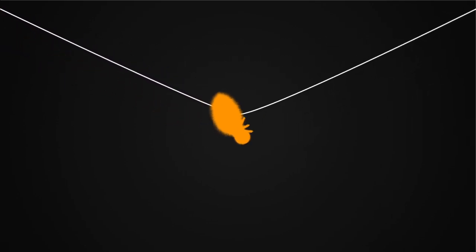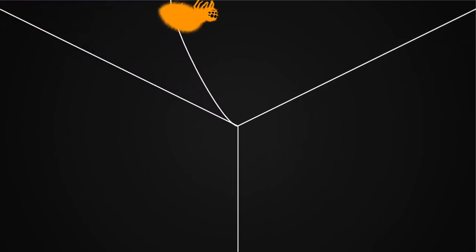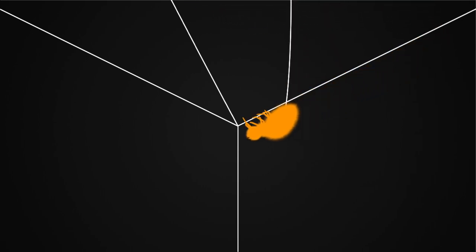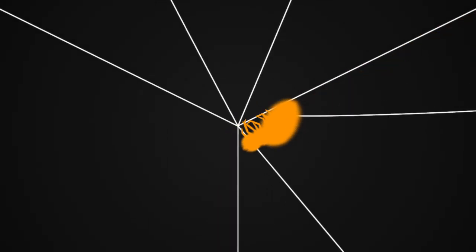When a spider builds its web, something extraordinary happens. The spider tunes individual strands of silk by stretching or shortening them. Each strand vibrates at a different frequency.